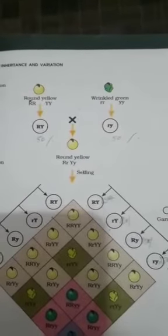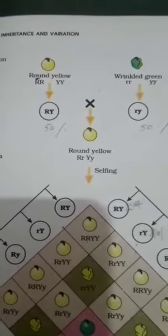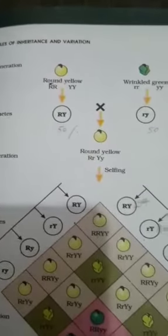Round is represented by capital R and yellow is represented by capital Y, because capital R and capital Y are the dominant alleles representing round shape and yellow color of the seed. Wrinkled shape is represented by small r and green color of the seed is represented by small y.